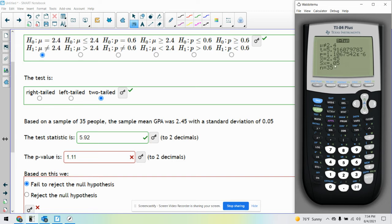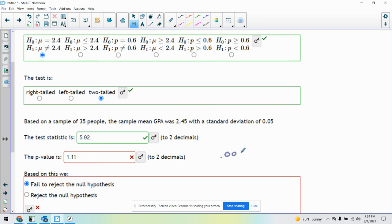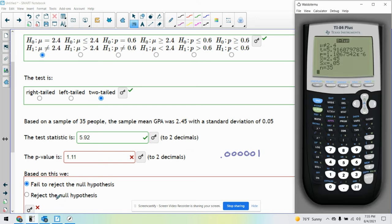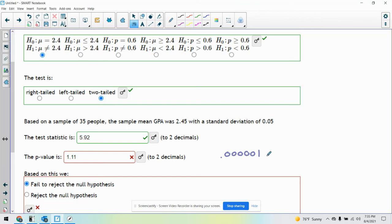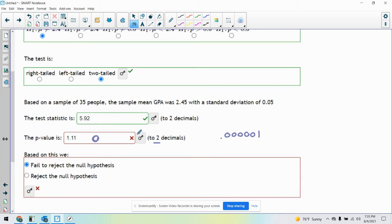So our test statistic is 5.92. That's good. But be careful here. This p-value, notice this e to the negative six. Okay. That means you take this decimal point and move it six places to the left. So this is basically going to be 0.50s and then a one. Okay. So this is so small, to two decimal places this is just going to be 0.